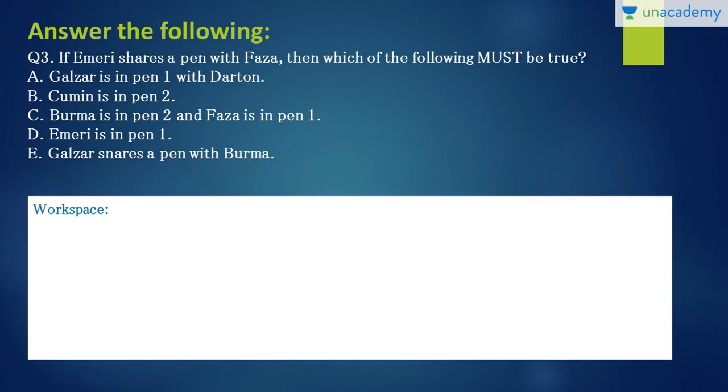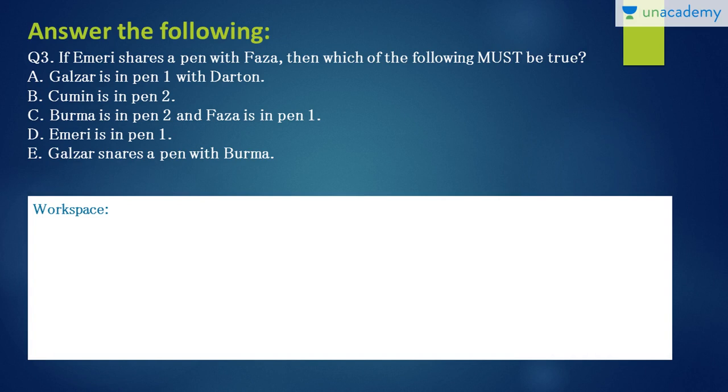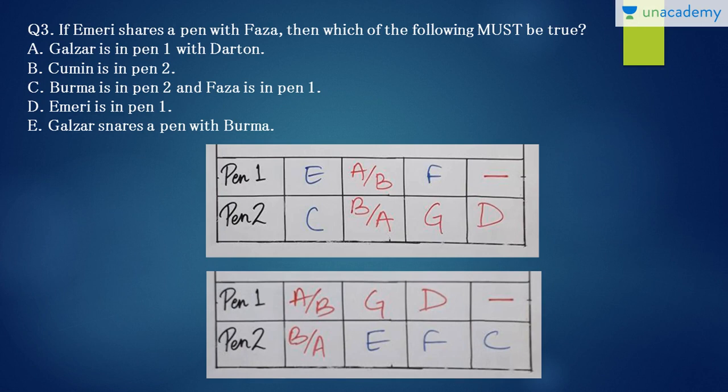Next question. If Emeri shares a pen with Faza, then which of the following must be true? Must be true. If E and F are together. Okay, so there are two options. E and F can be together in pen 1 along with either A or B. In that case, C goes down with either B or A and G and D. Next, there can be one more possible option when G and D is in pen 1. In that case, E, F and C have to take these three spots along with either A or B. So now let us check the options.